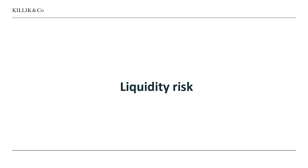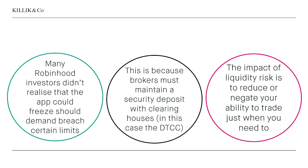Then there's liquidity risk, and this is slightly different. This manifested with many Robinhood investors not realizing that the app they were using might freeze if demand for a single stock or a small group of stocks like GameStop breached certain limits. The technical explanation is that brokers or market participants must maintain a security deposit with clearinghouses, which are there to make sure that trades don't fail, especially large volumes of trades. In this case, the DTCC effectively said you cannot accept any further orders until you've upped the level of the security deposit you keep with us. And because it was a huge amount required, it took some scrambling on the part of Robinhood to find the necessary funds.